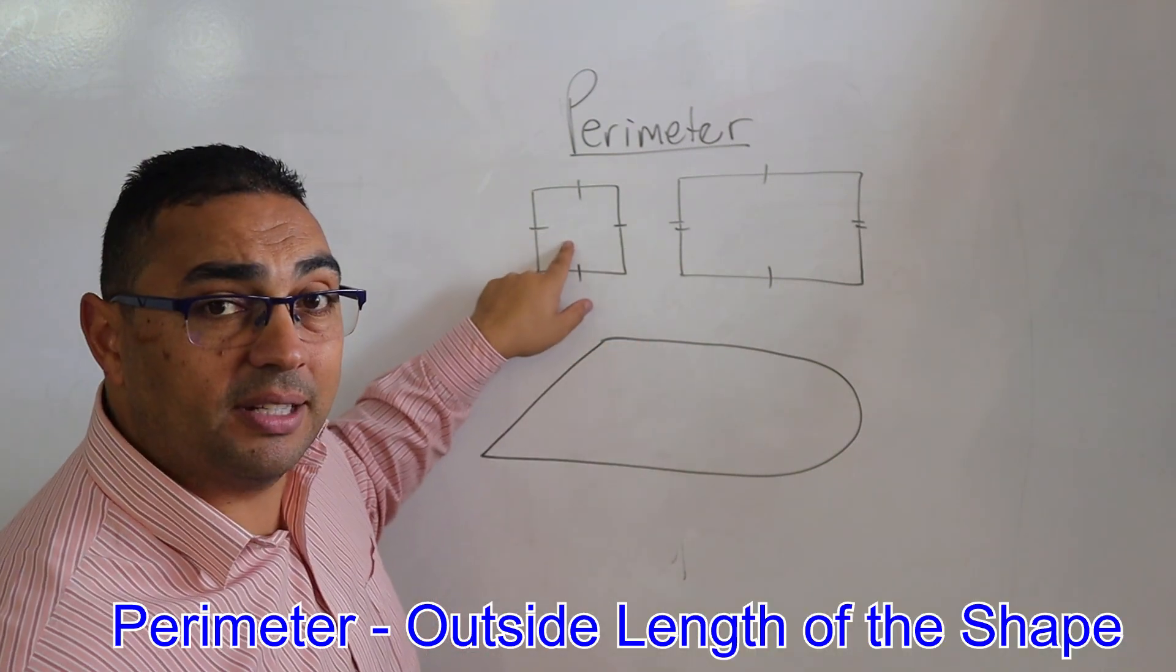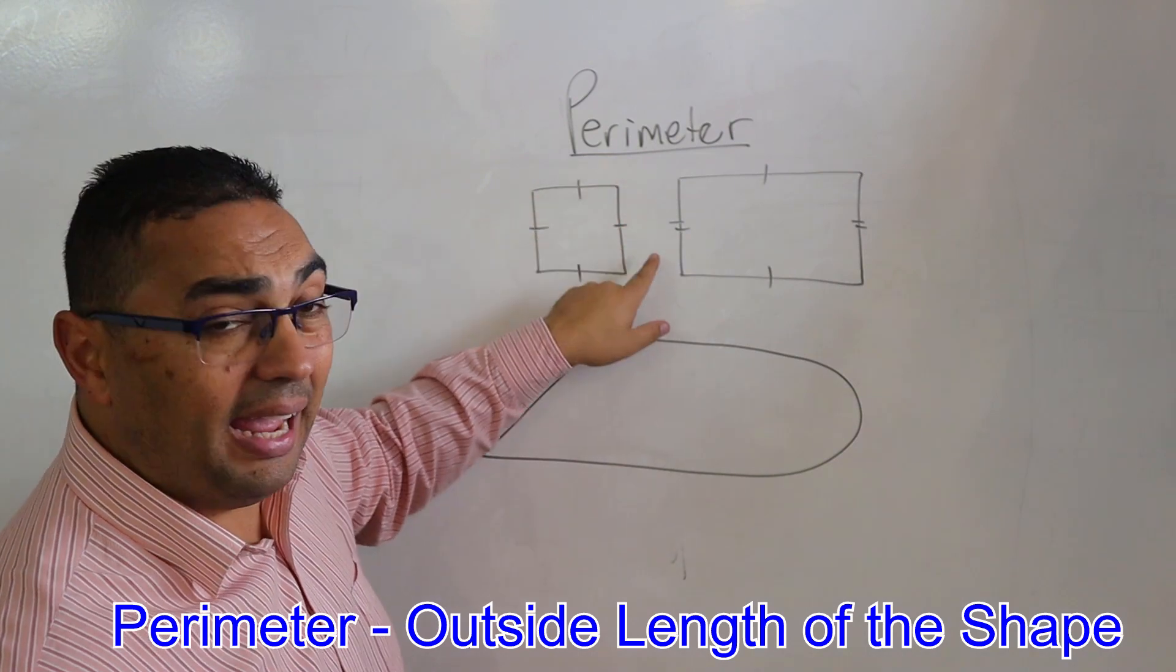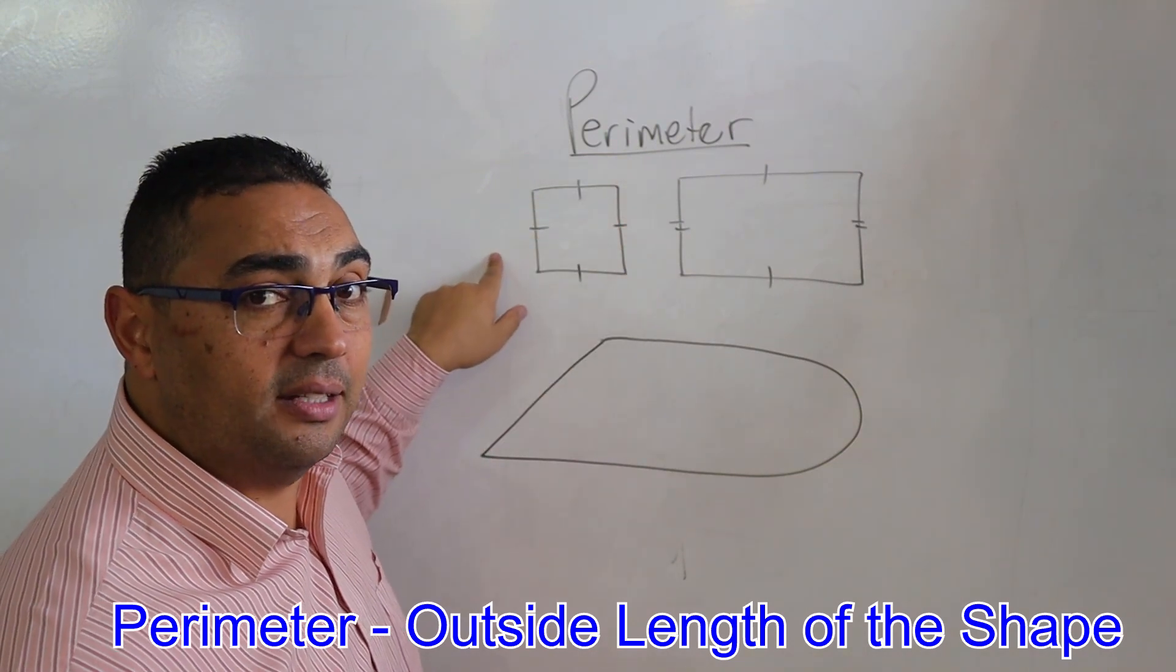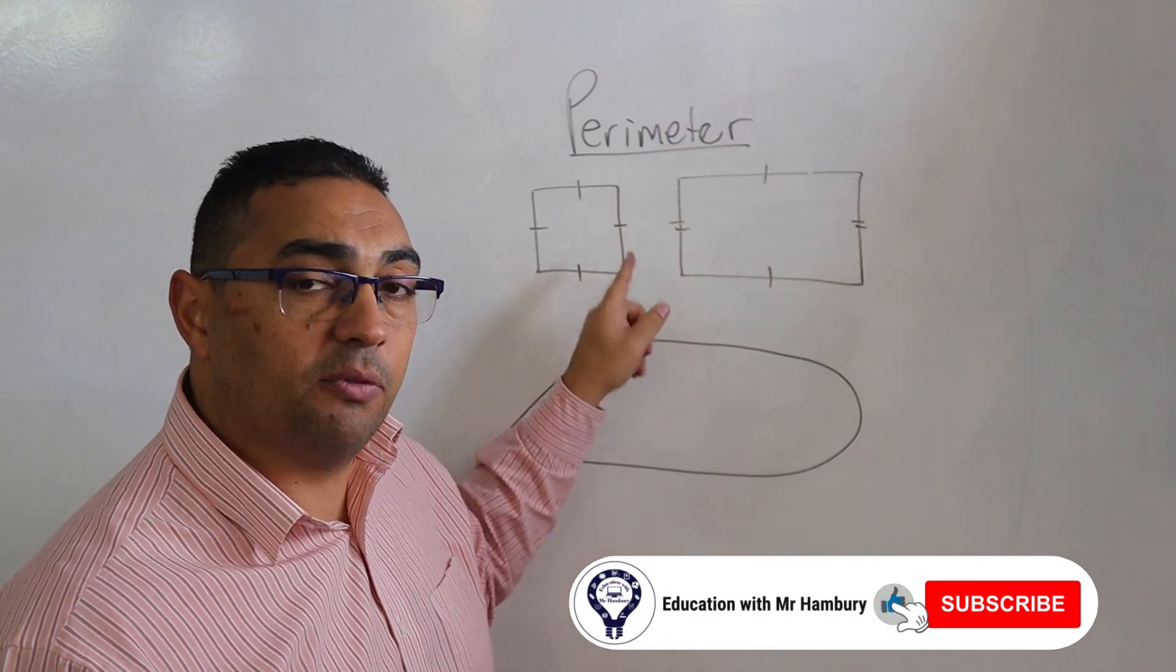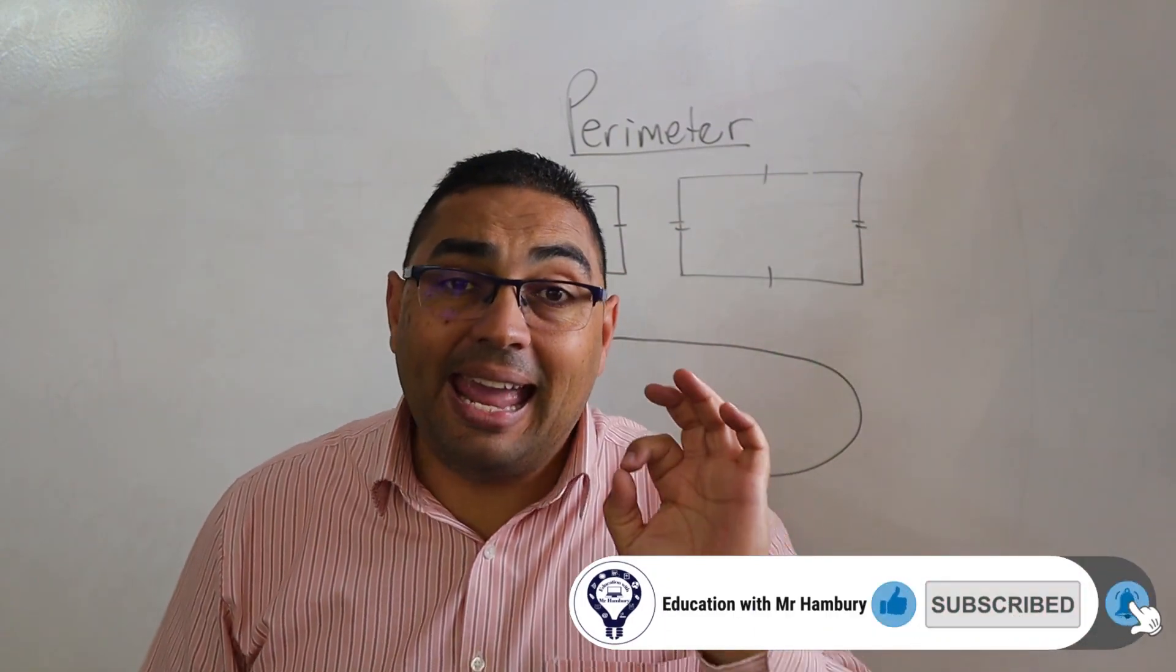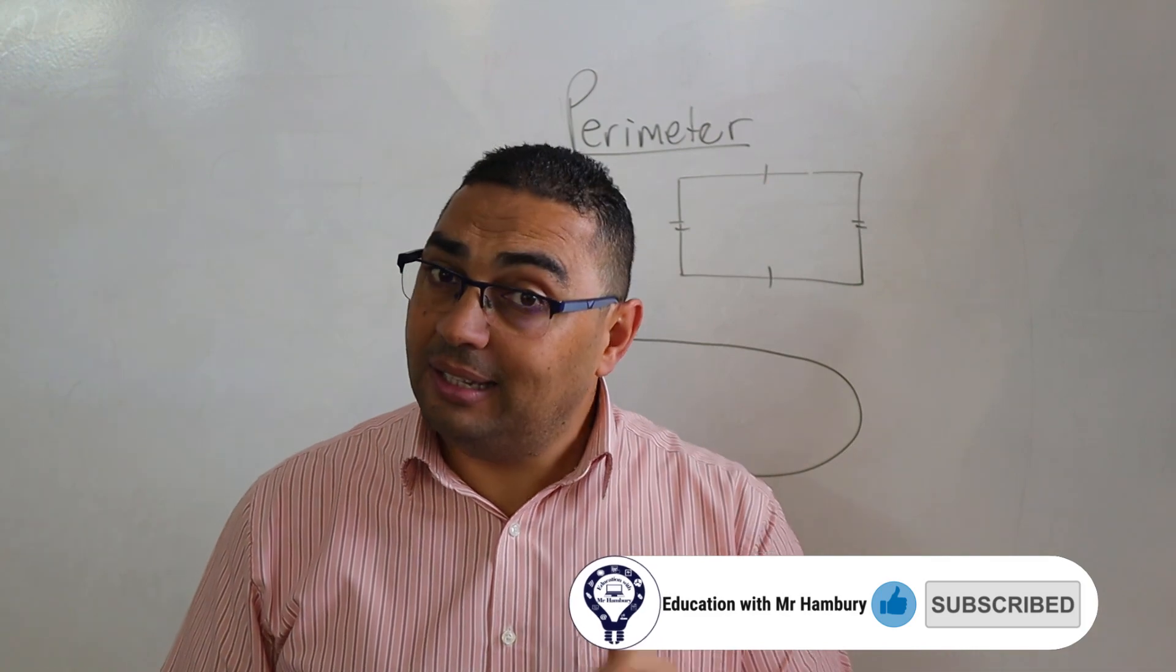So in the case of the circle, I'm calculating, I'm adding up all of these sides, whatever those measurements are. With my rectangle, I'm adding up the measurements of all the sides. I am adding those sides. Okay, take note of that.